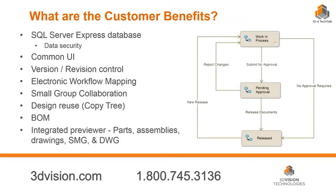There's a workflow included which you can modify right out of the box with PDM Standard. Say I'm working on a part and I want you to approve it because you're my boss and you have to sign off on everything. I'm going to put it in the approval workflow process — I check it in, submit it for approval, and you're going to look at it and tell me whether I need to change it or whether manufacturing is going to be able to see it. This helps because a lot of times companies find they are manufacturing the wrong component.